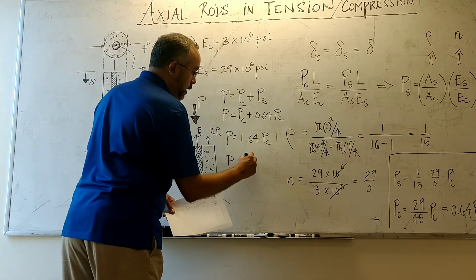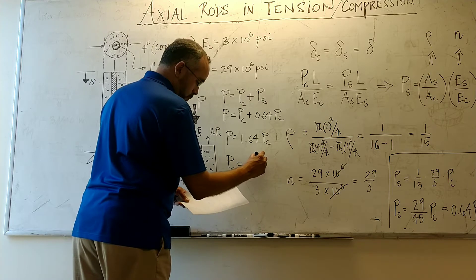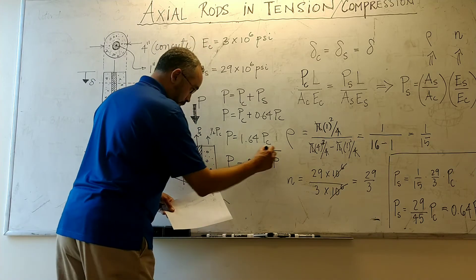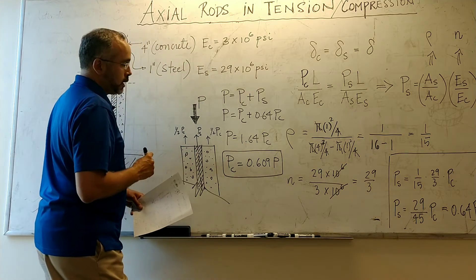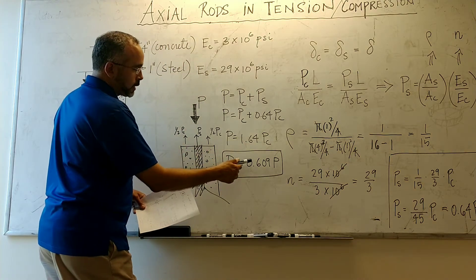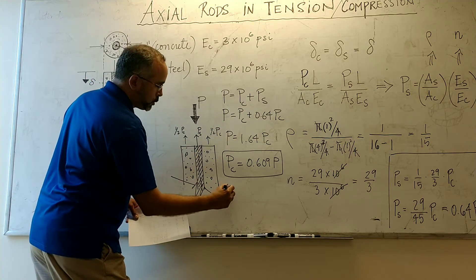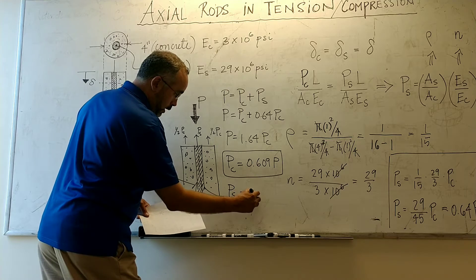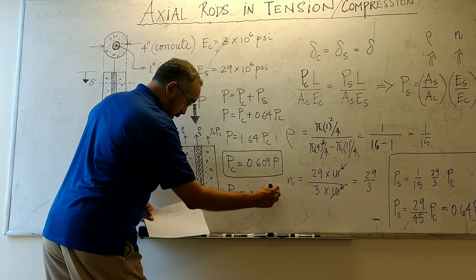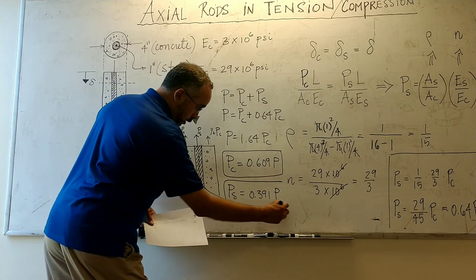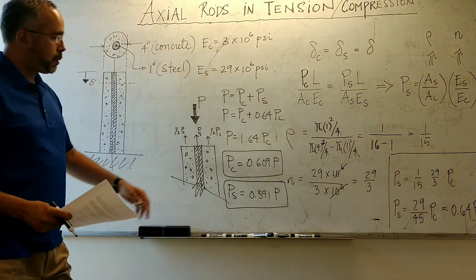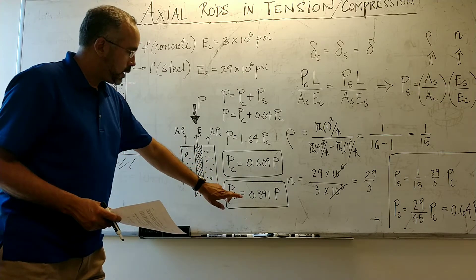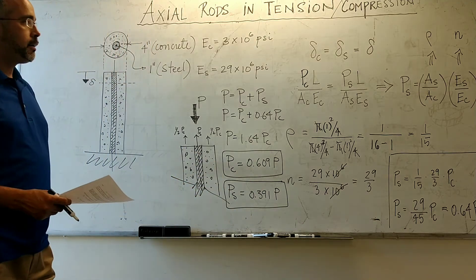Solving for P_concrete: P_concrete = P / 1.64 ≈ 0.609 P. Subtracting from the total, the load going to the steel is approximately 0.391 P. So roughly 60% of the load is carried by the concrete and 39% is carried by the steel.